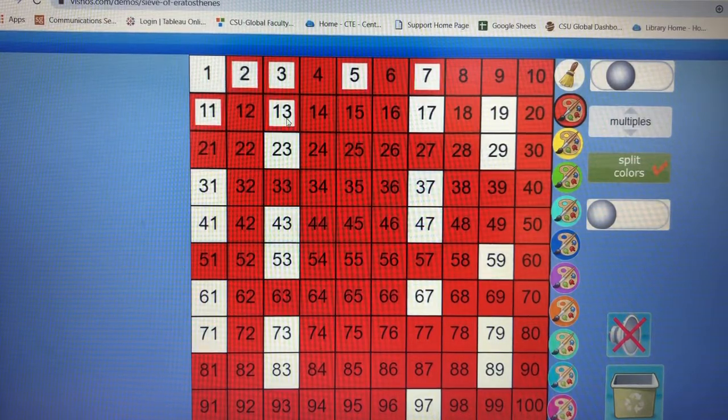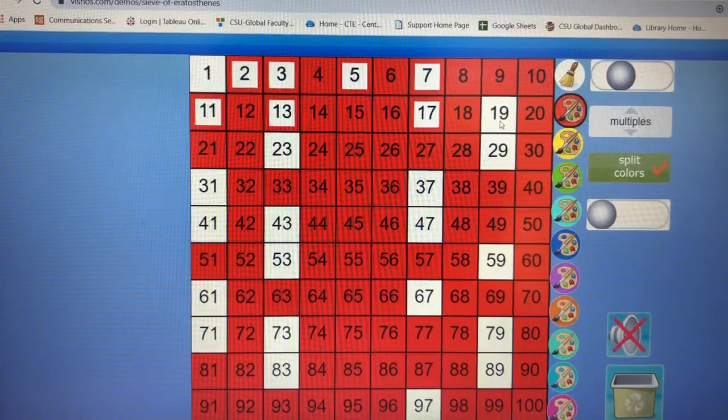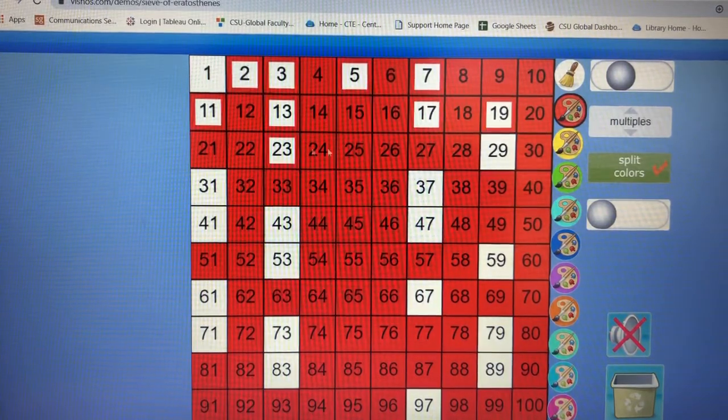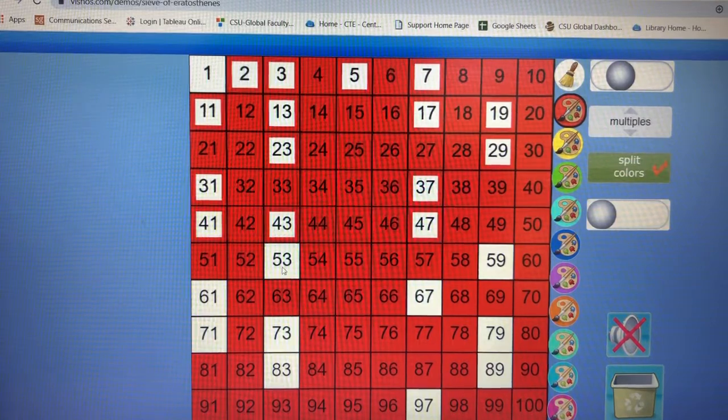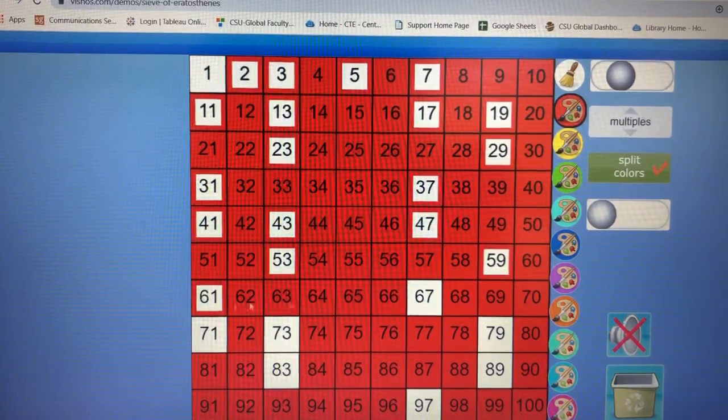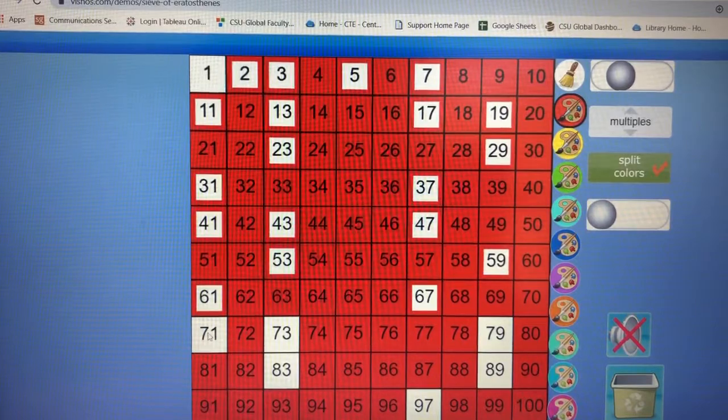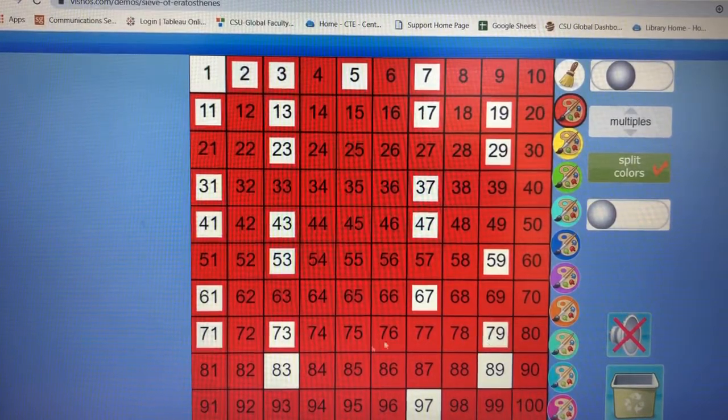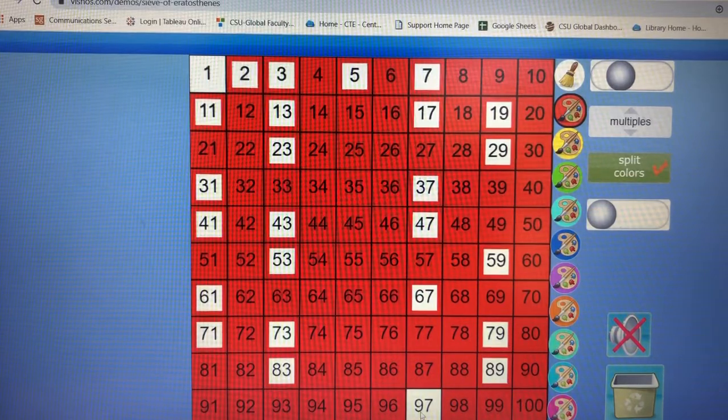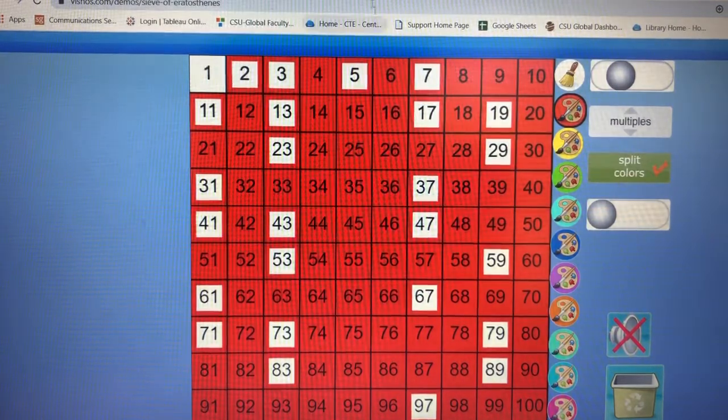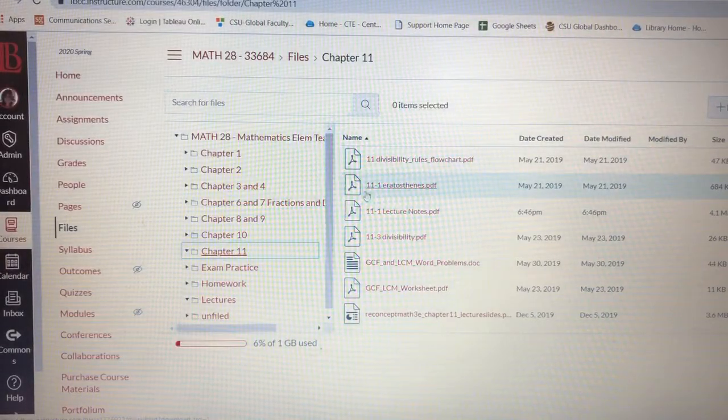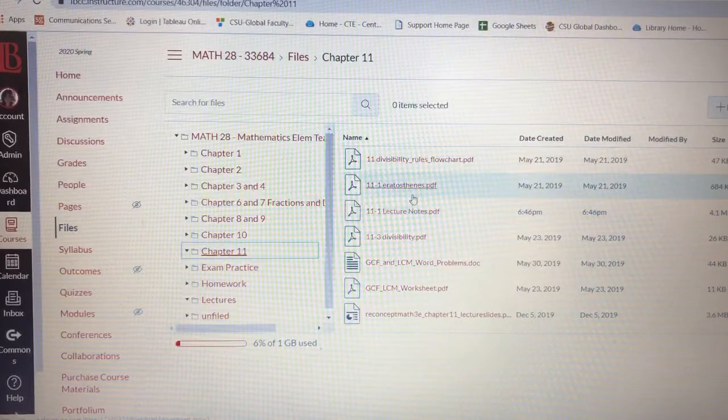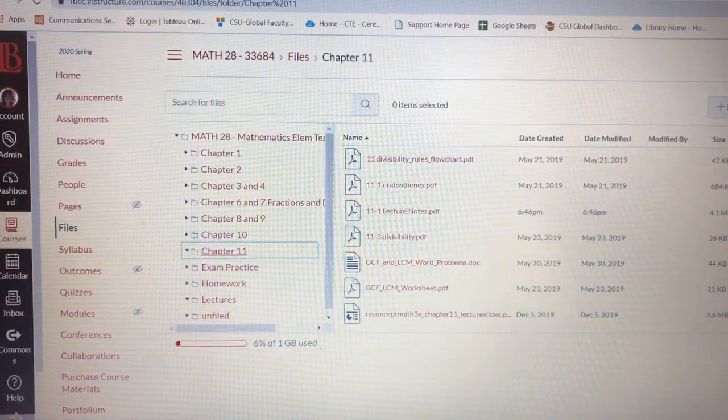And then all the multiples of 13, and 17, and 19, 23, etc., until all that we're left with are the prime numbers. This is kind of cool. I also have a worksheet that I've uploaded to Canvas in Chapter 11—it's right here, the 11.1 Eratosthenes.